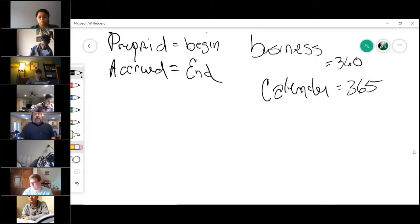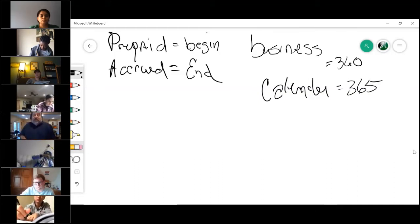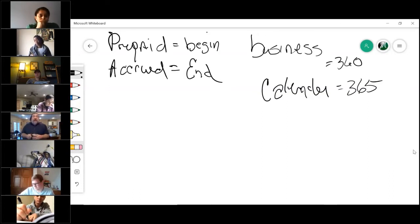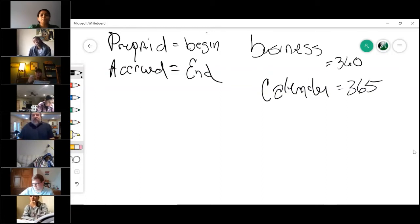So they'll say using a business year or using a calendar year, because business is really easy—every month has 30 days, which freaks you out because that means February actually has 30 days in a business year. So you've got a prepaid or an accrued, you've got a business year and a calendar year. Both of those become important in prorating a bill.